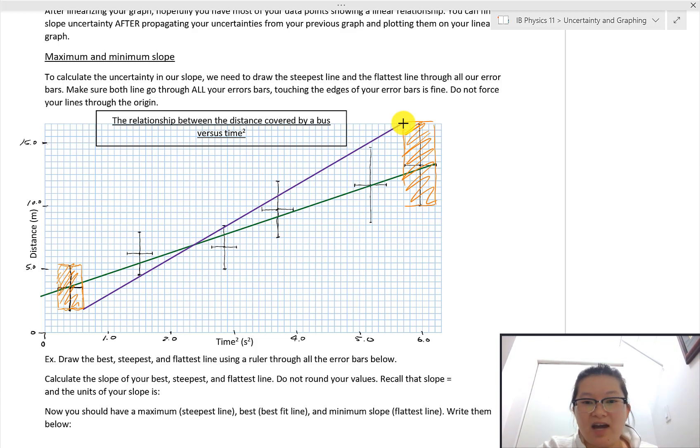So that is going to give me the largest possible slope that I can generate from all of these error boxes from my data points. And then before I kind of draw my line, I'm just going to double check my purple line, which is my steepest. Oh, whoopsies, I already did it.